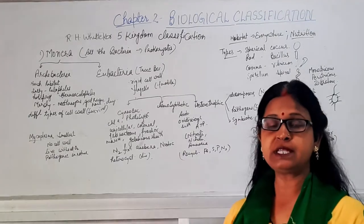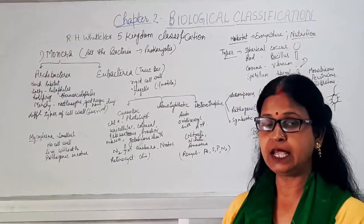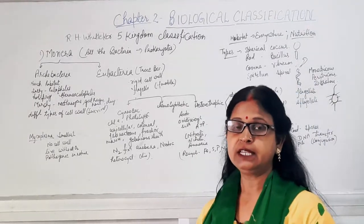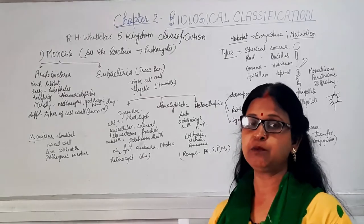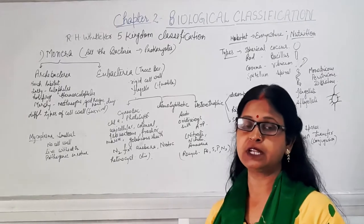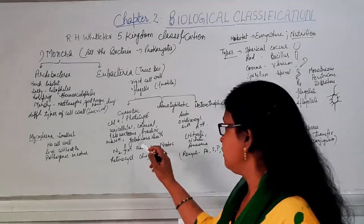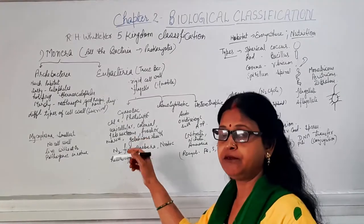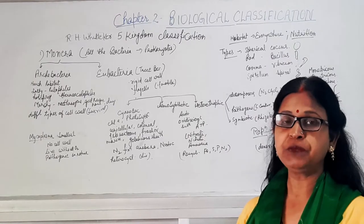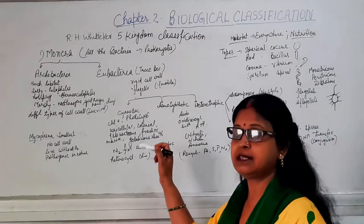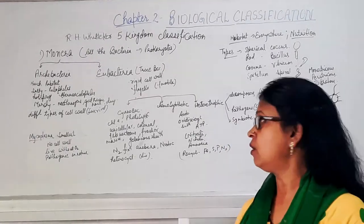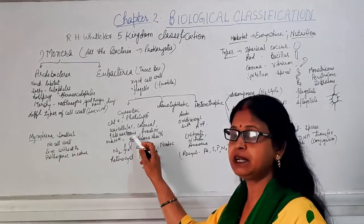Cyanobacteria have a specialized type of chlorophyll A pigment and are photosynthetic in nature. They are autotrophs and can fix atmospheric nitrogen into the soil, hence increasing soil fertility. They may be unicellular or multicellular. Multicellular cyanobacteria may live in colonial groups or be filamentous.